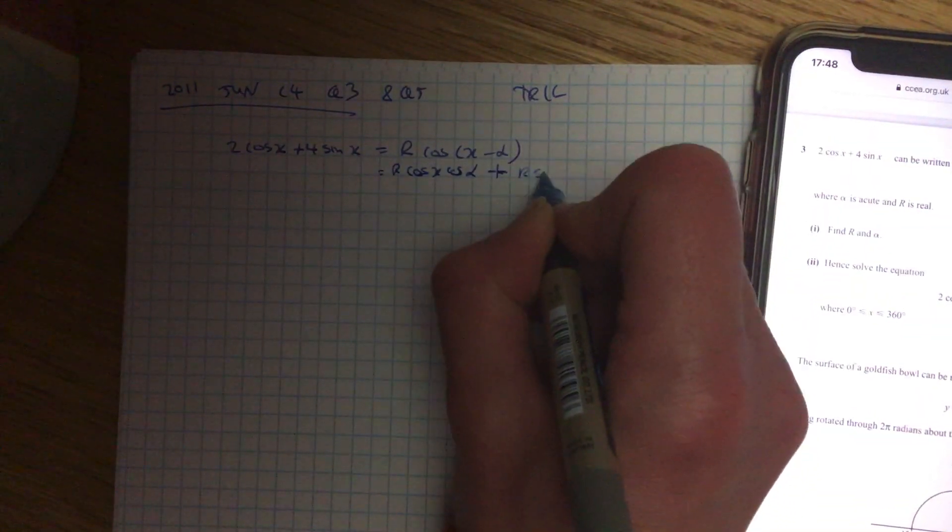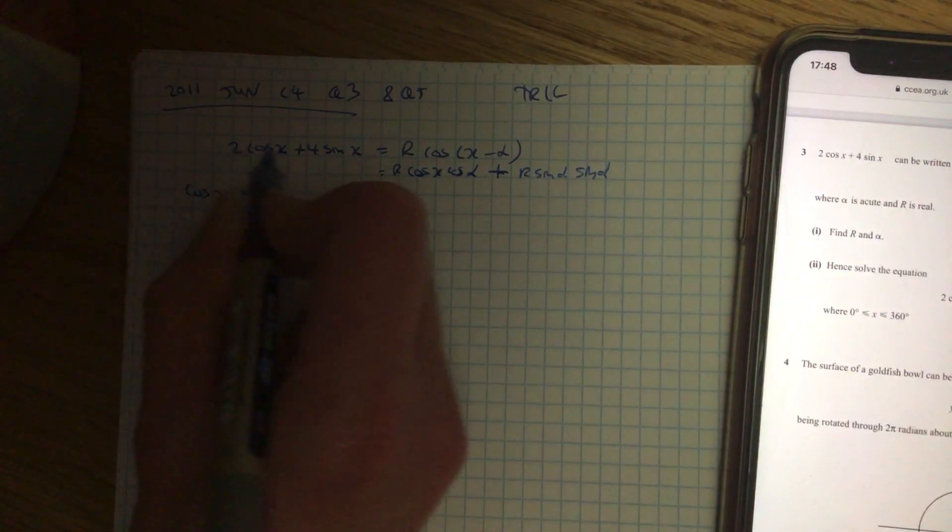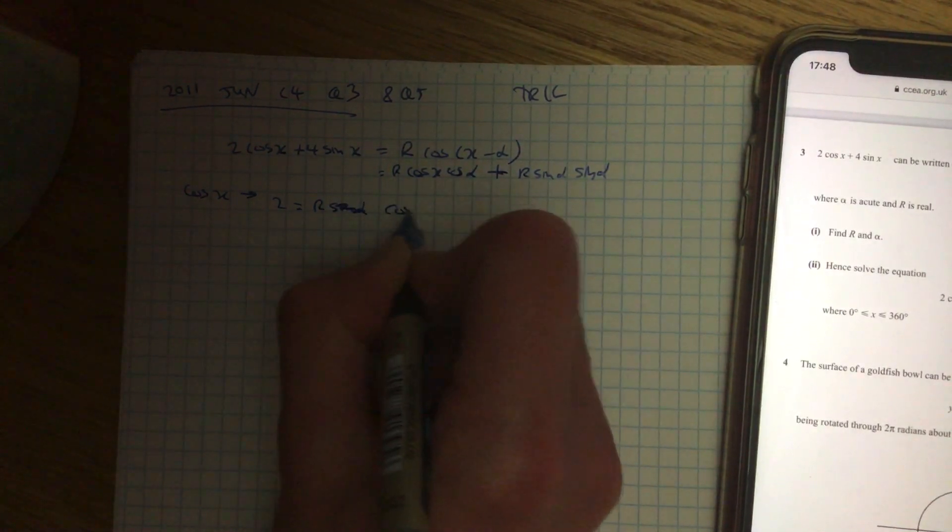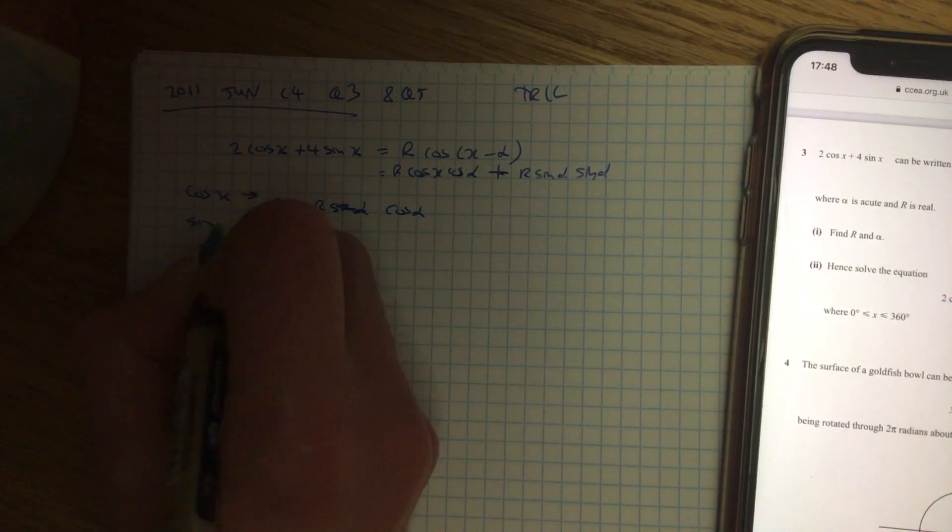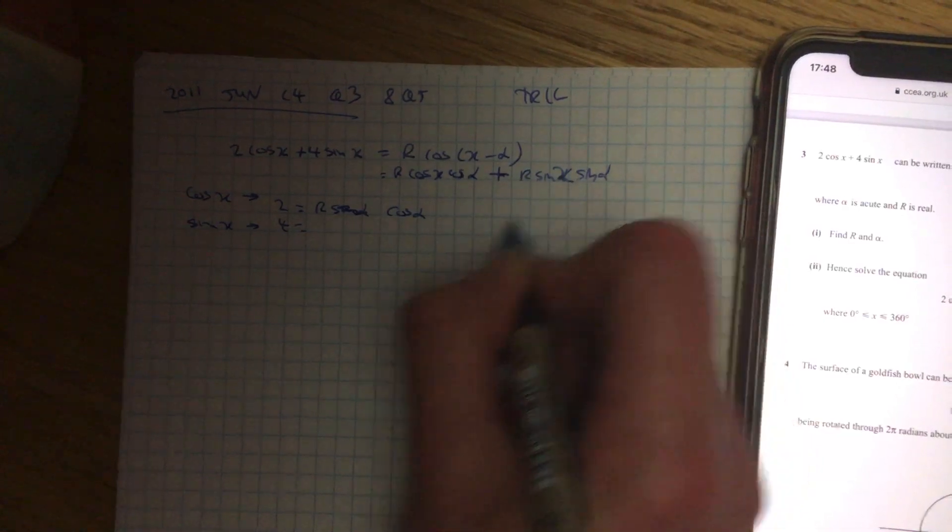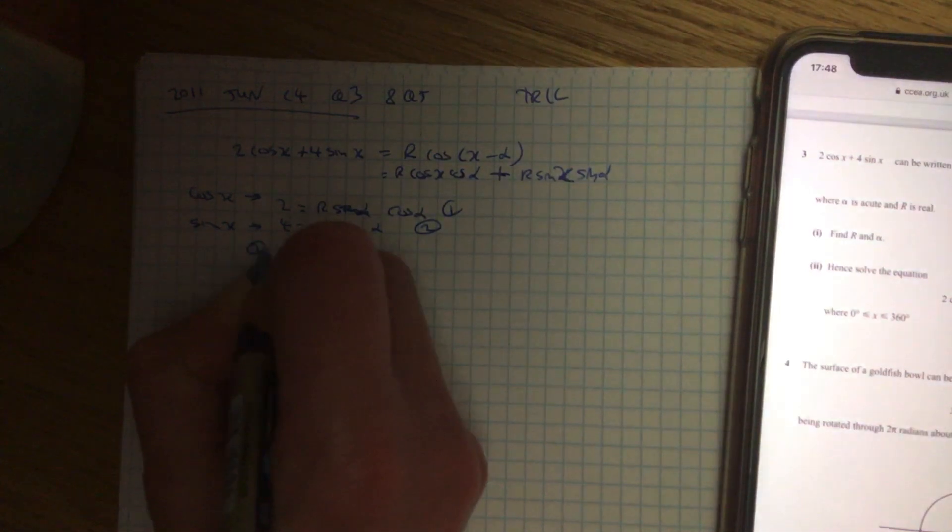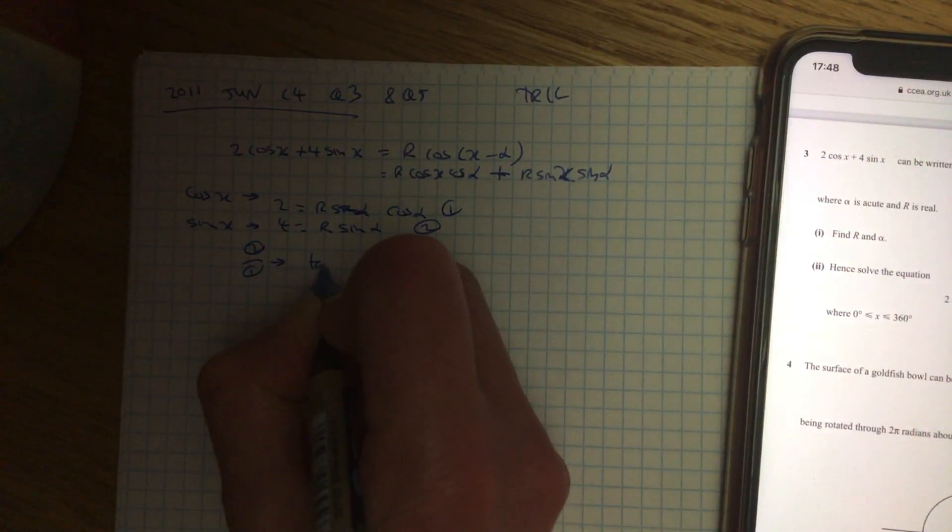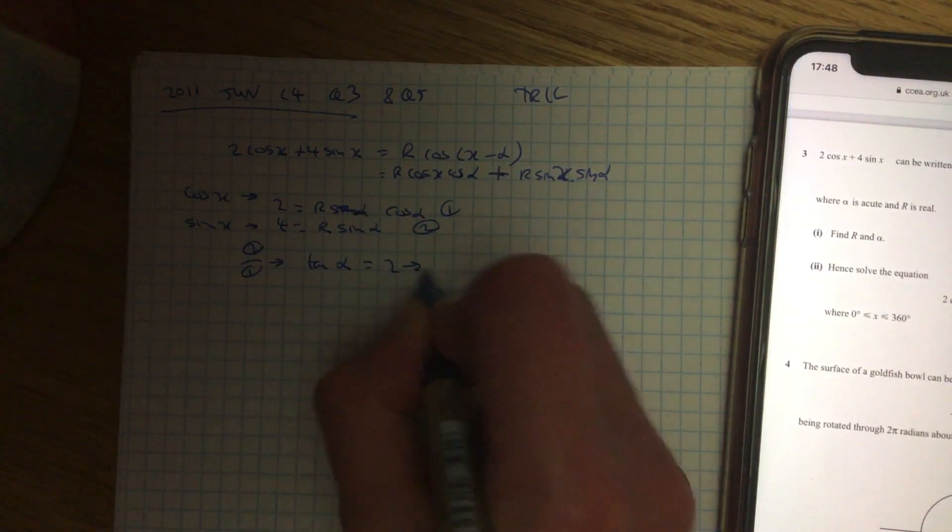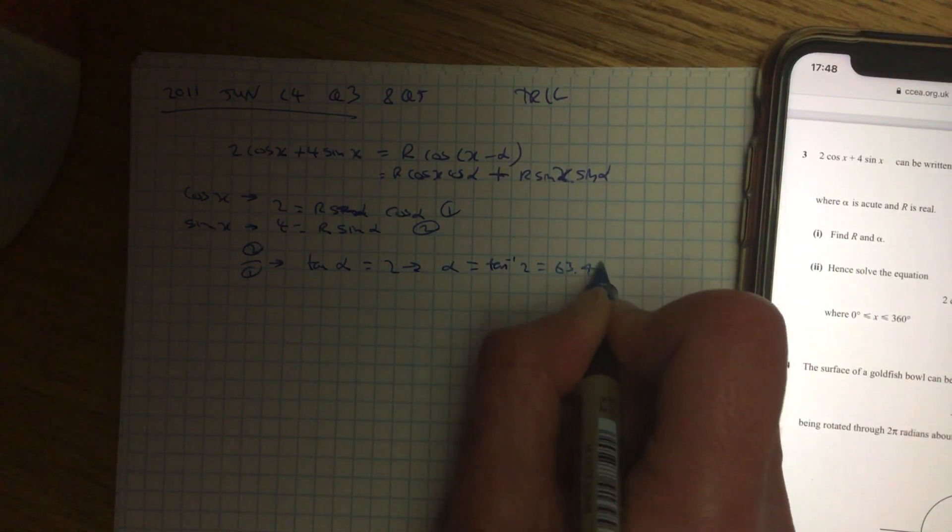So it's plus R sine x sine alpha. Doing the coefficients of cos x, you've got 2 equals R cos alpha, and doing the same for your sine, you've got 4 equals R sine alpha, so 1 and 2. Put equation 2 over 1, so you get tan, giving you 4 over 2, which is 2, so alpha is inverse tan 2, which is 63.43 degrees.